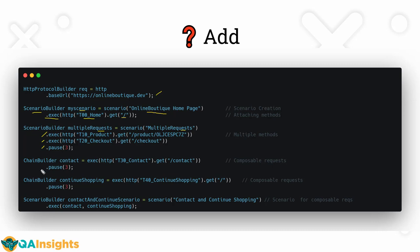The third method is using the chain builder — a composable request approach, like a module. We create an object called contact and immediately execute it, launching slash-contact and pausing for three seconds. We then create another chain builder for continue shopping and pause for three seconds. To attach both chain builders, we create a scenario builder with a new object called contact-and-continue-scenario, naming it 'contact and continue shopping', and executing both contact and continue shopping.